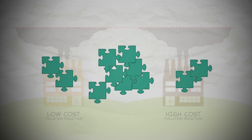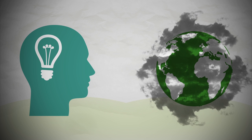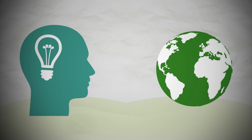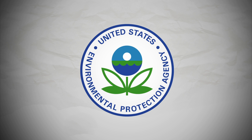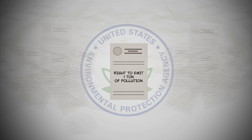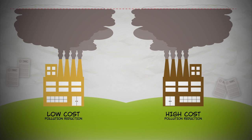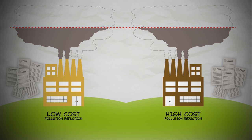So how can we draw on this dispersed information and harness the energy of entrepreneurs to discover the best ways to reduce pollution? Instead of commanding how to reduce pollution, suppose the government issues pollution permits — rights to emit pollution. One permit gives you the right to emit, say, one ton of polluting gases. Pollution permits don't sound very environmentally friendly, but the government only issues a limited number of permits, and that equals the same total reduced pollution as under command and control. So in the end, pollution reduction is the same.